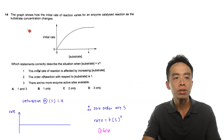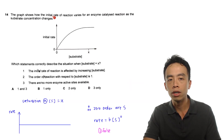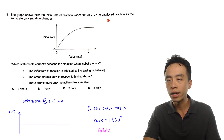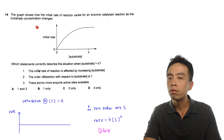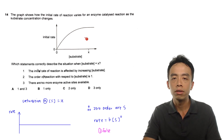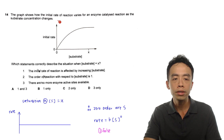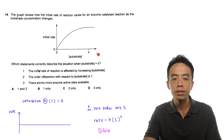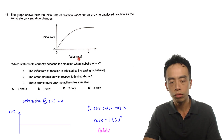Alright, question 14 goes something like this. The graph shows how the initial rate of reaction varies for an enzyme-catalyzed reaction as the substrate concentration changes. In terms of the information inside this graph, the y-axis will be the initial rate, and the x-axis will be the concentration of the substrate.